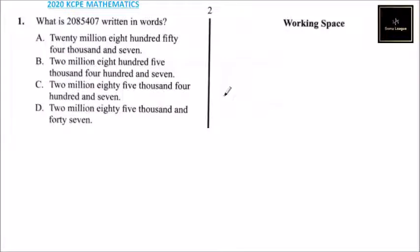This is 2020 KCPE Mathematics which was done in March 2021 because of COVID. Question number one: What is 2085407 written in words? So this is the number.